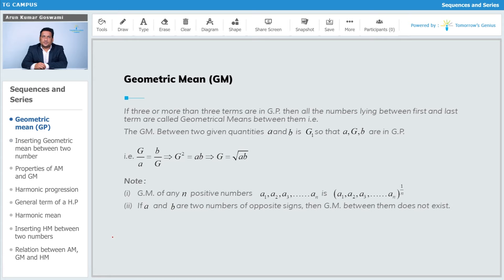Let's talk about geometric mean. If three or more numbers are in GP (geometric progression), all the numbers lying between the first and last term are known as geometric means. What is the meaning of geometric means? Like previously discussed in AP (arithmetic progression), geometric mean is nothing but average—the average of a geometric series.